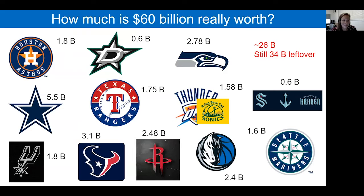I like sports, so I calculated how much it would cost to buy the professional baseball, football, hockey, and basketball teams in both Texas and Washington State. You could buy all of these teams twice over and still have a little bit of money left to spend. This shows how costly norovirus disease is on both a monetary and health level.